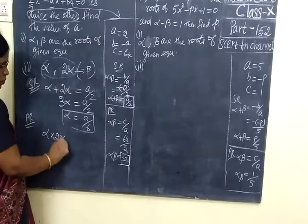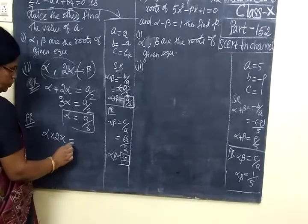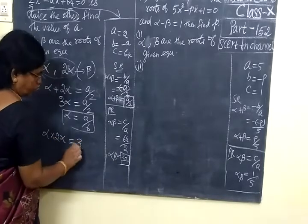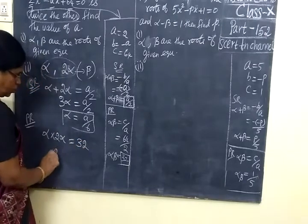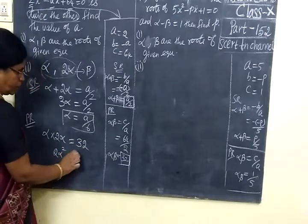So alpha into 2 alpha equal to, the product is c by a which is 32. So 2 alpha squared equal to 32.